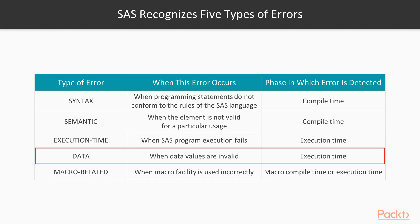The fifth type is macro-related errors, which occur when the macro facility is used incorrectly. These can happen at both macro compile time and execution time. For example, at compile time, forgetting to write the percent sign before a macro name is a syntactical error. At execution time, referring to a wrong variable name or a macro function not performing the correct logic are errors detected during execution.